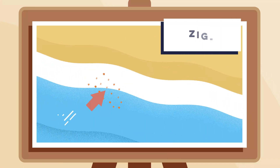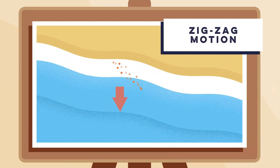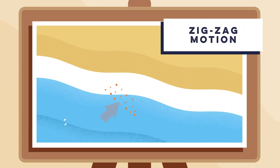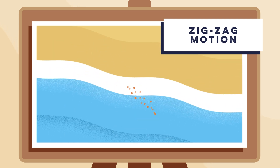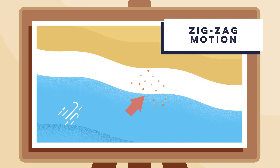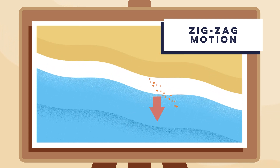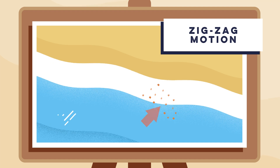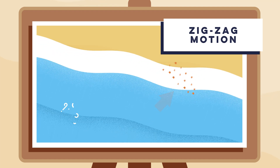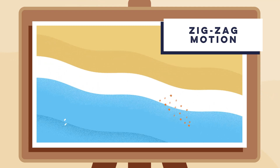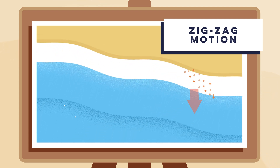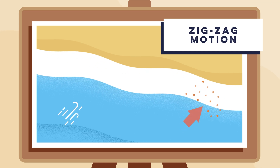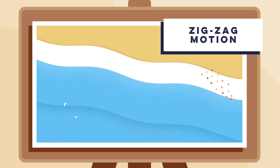Step four is the zigzag motion. This ongoing push and pull doesn't just happen in one place — it actually moves along the beach. Picture it as a side-stepping motion, where each wave pushes the material a little bit further along the coast before being dragged back out.